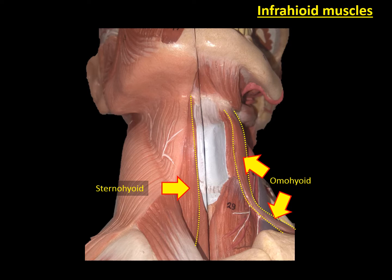If we remove the sternohyoid muscle, we can observe the deeper muscles of the infrahyoid group. Here we can see at the superior part the sternothyroid muscle, and inferior to this one we have the sternohyoid muscle.